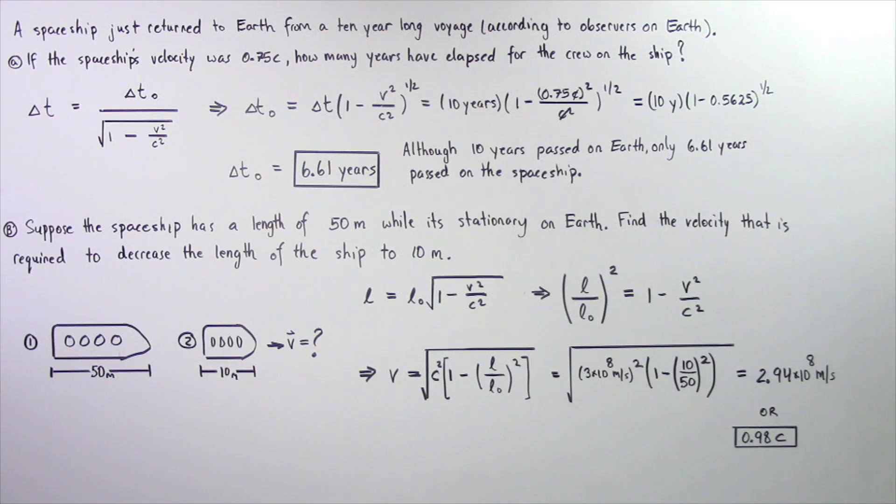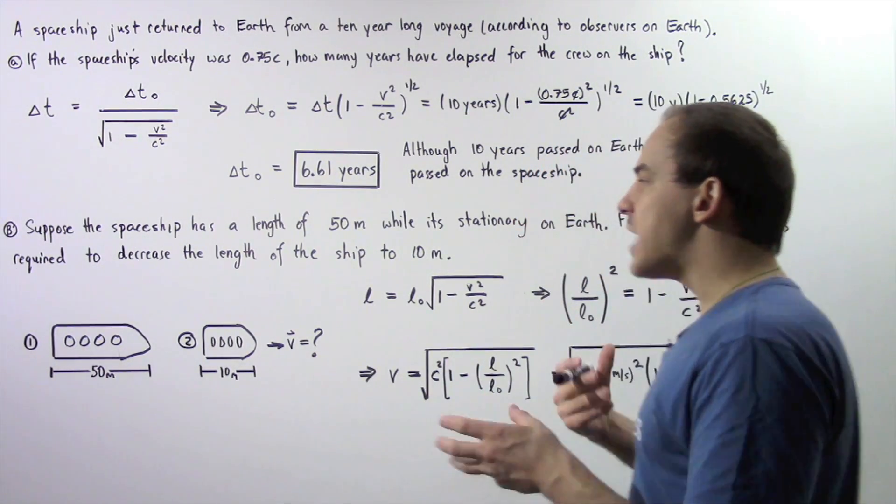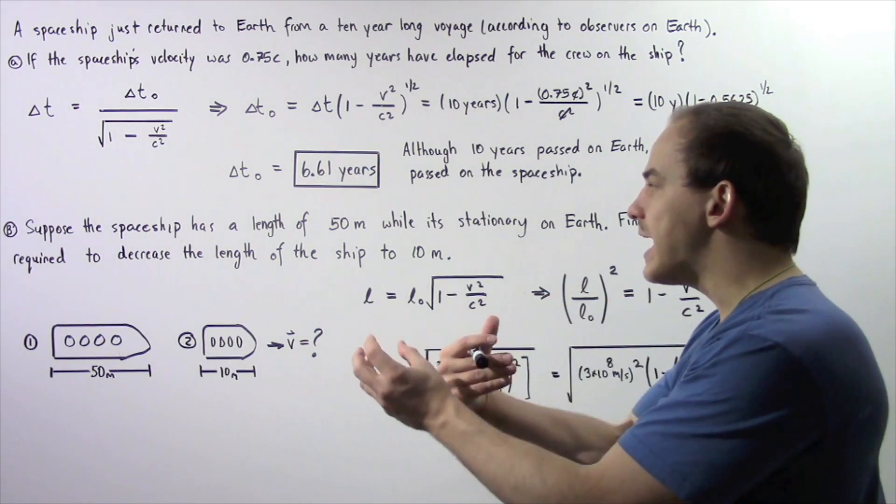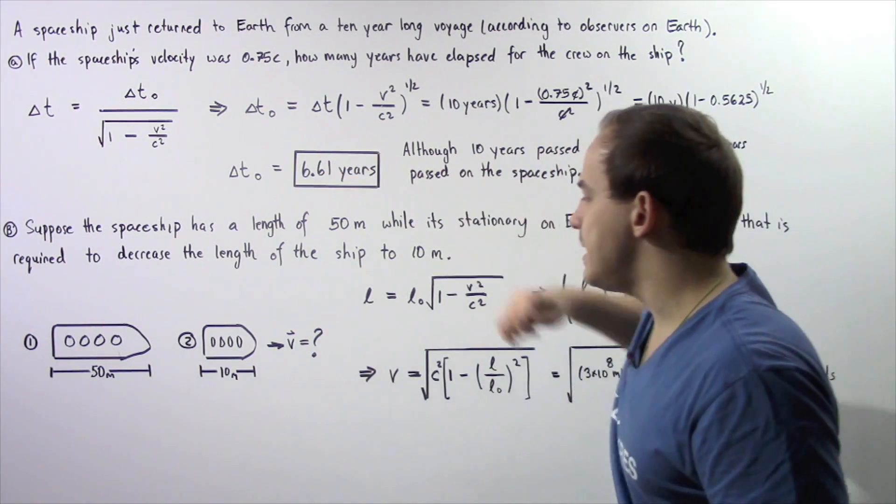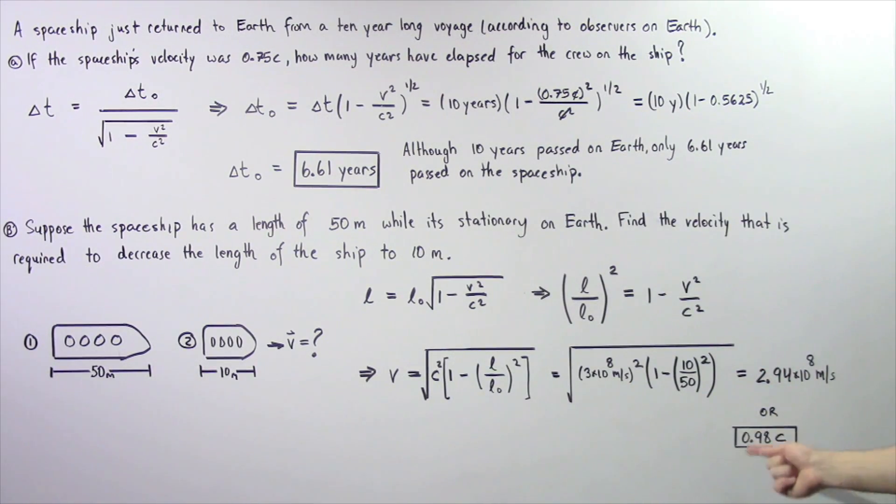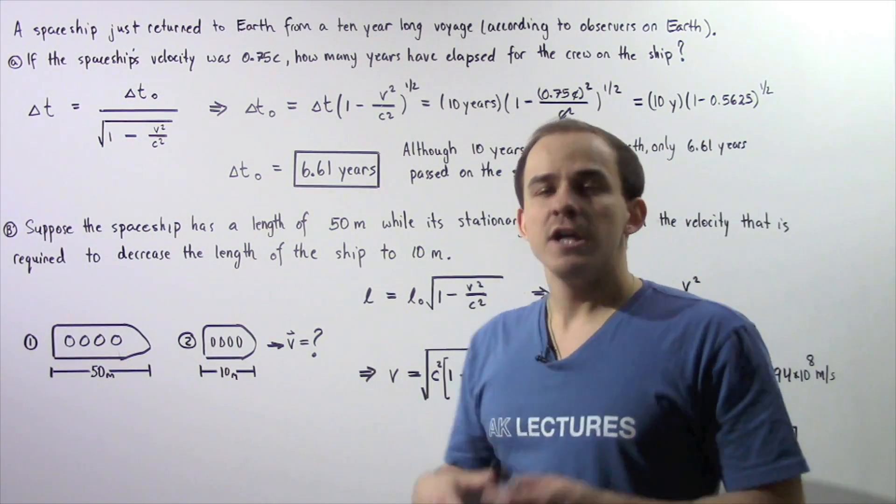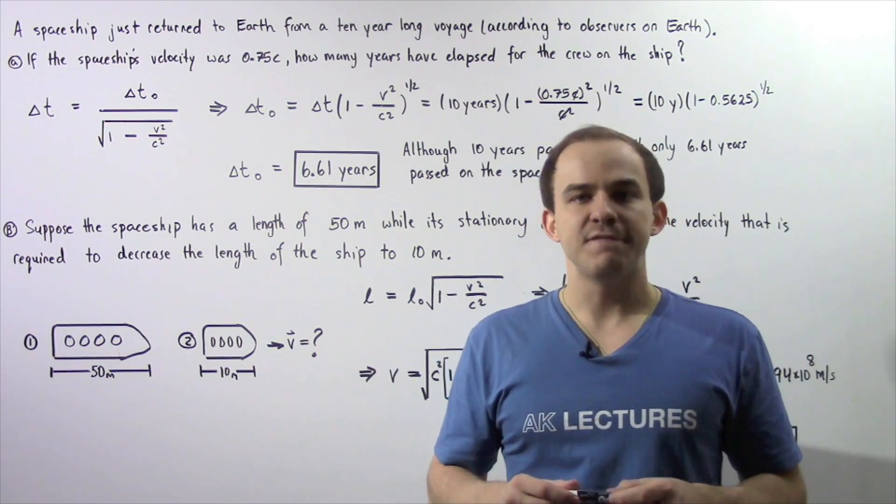We plug in our values and we get about 2.94 times 10 to the 8 meters per second is the velocity of the spaceship that contracts the length from 50 meters to 10 meters. This is about 0.98 multiplied by C, representing 98% of the speed of light in a vacuum.